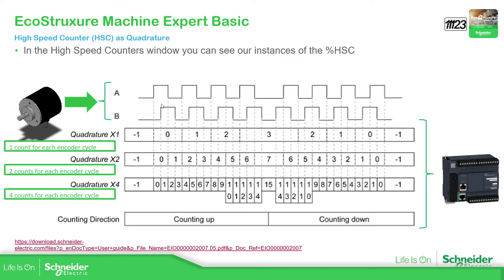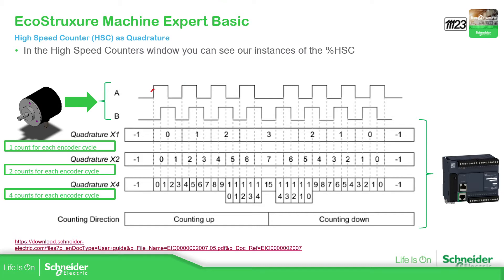Now what is the big difference here is how it takes into account counting up and counting down in the PLC. With quadrature per one it should be almost the same as pulse direction — it just sees each rising edge of pulse A and takes one count. So for each rising edge it counts up: one, two, and so on.